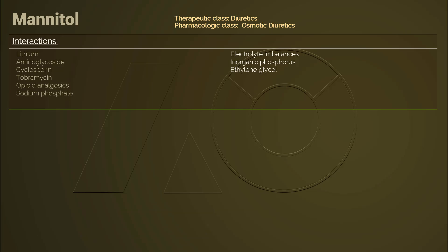Mannitol increases the excretion of lithium into urine. When given with nephrotoxic medications including aminoglycosides and cyclosporine, mannitol could increase the risk of toxicity and renal failure. It is not advised to use mannitol with sodium phosphate, as the osmotic diuretic can enhance the nephrotoxic effects of sodium phosphate. When used together with mannitol, opioids decrease the therapeutic effects and increase the adverse effects of the osmotic diuretic.